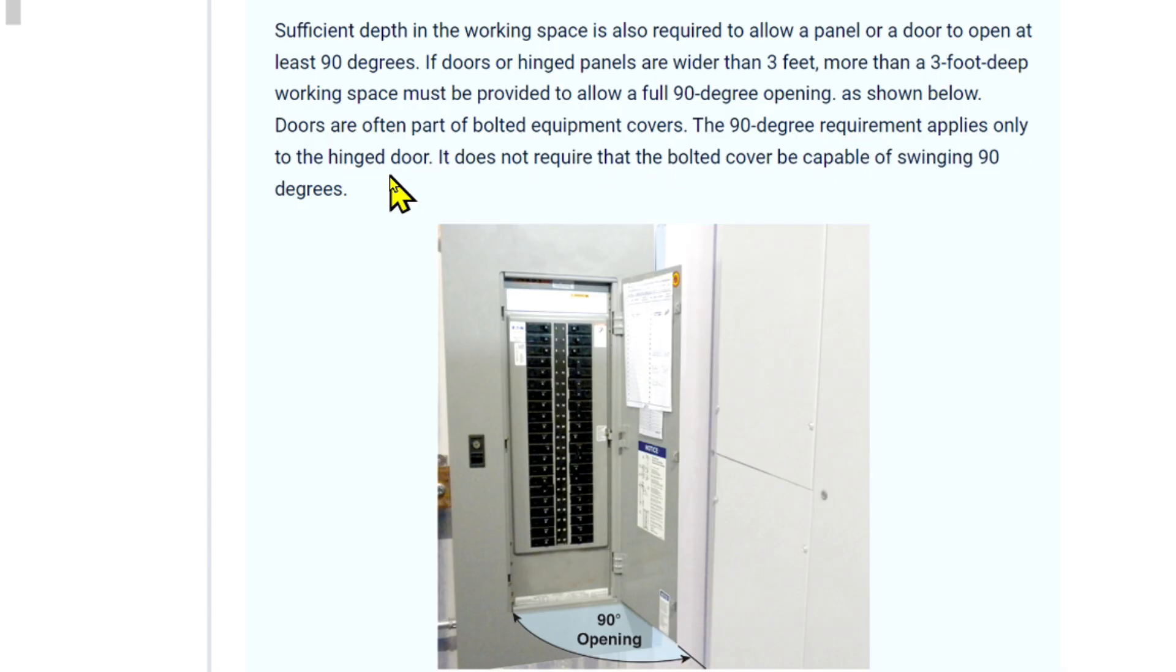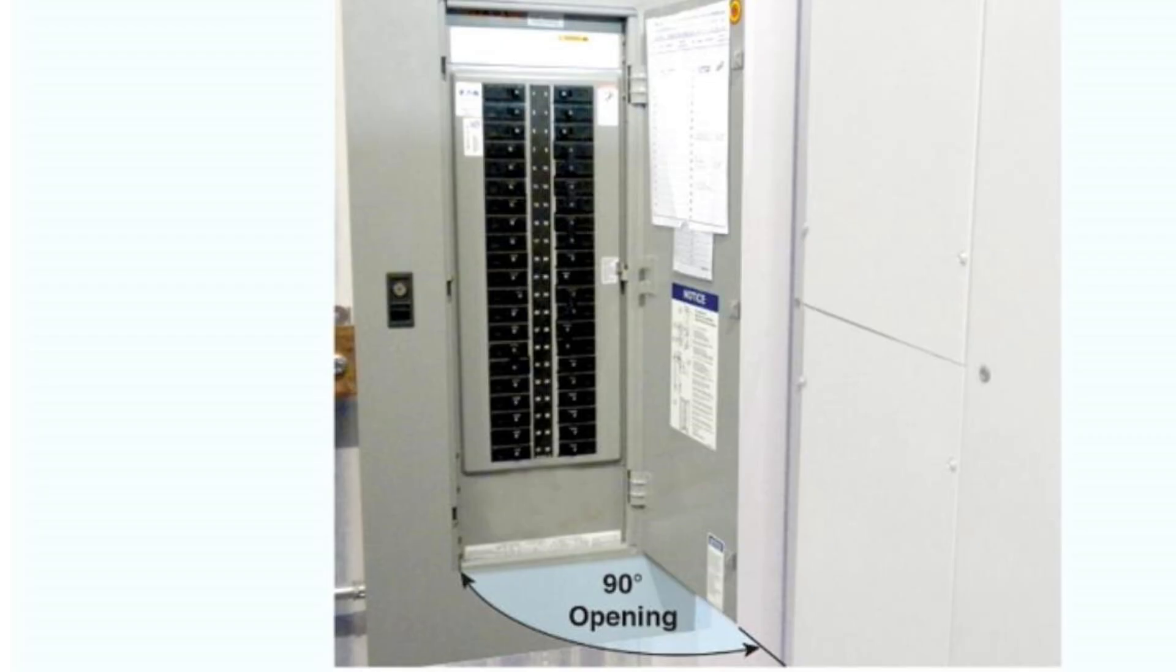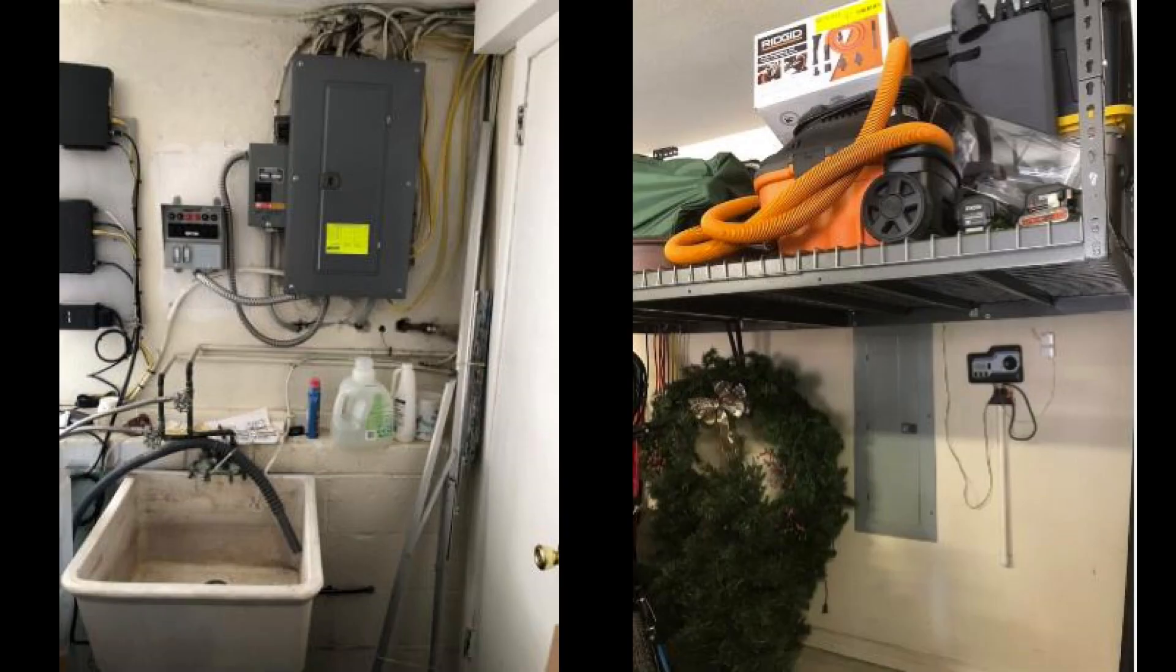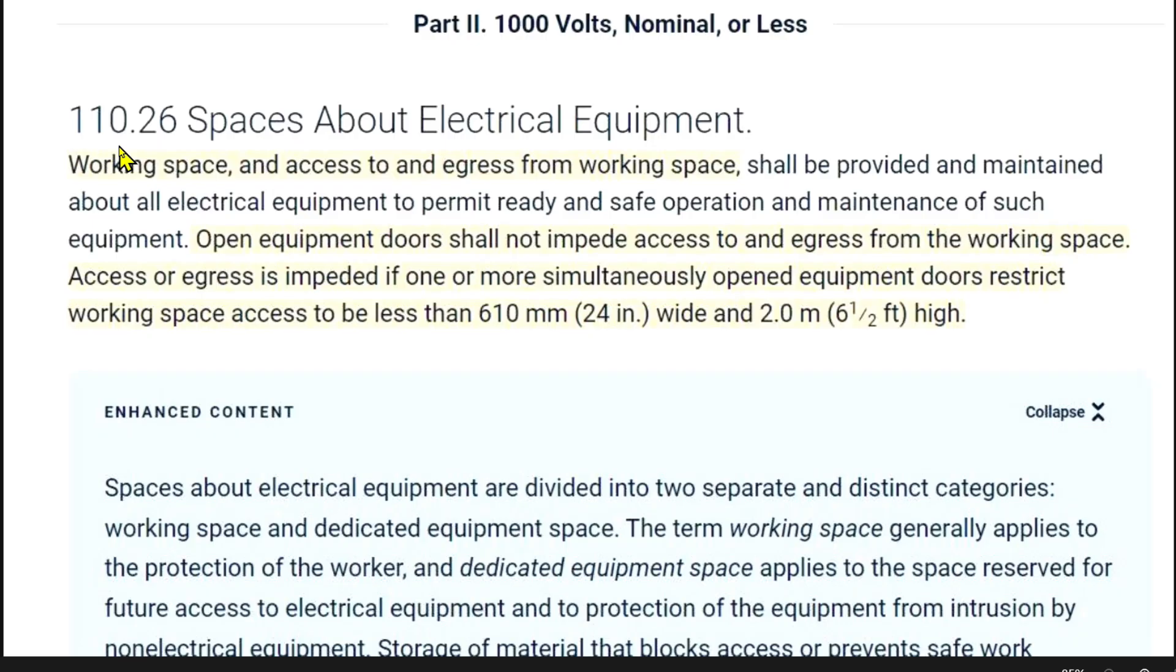Doors are often part of bolted equipment covers. The 90 degree requirement applies only to the hinged door, it does not require the bolted cover to be capable of swinging 90 degrees. Notice that in this case the bolted equipment cover goes all the way to the floor. There is no prohibition against this.